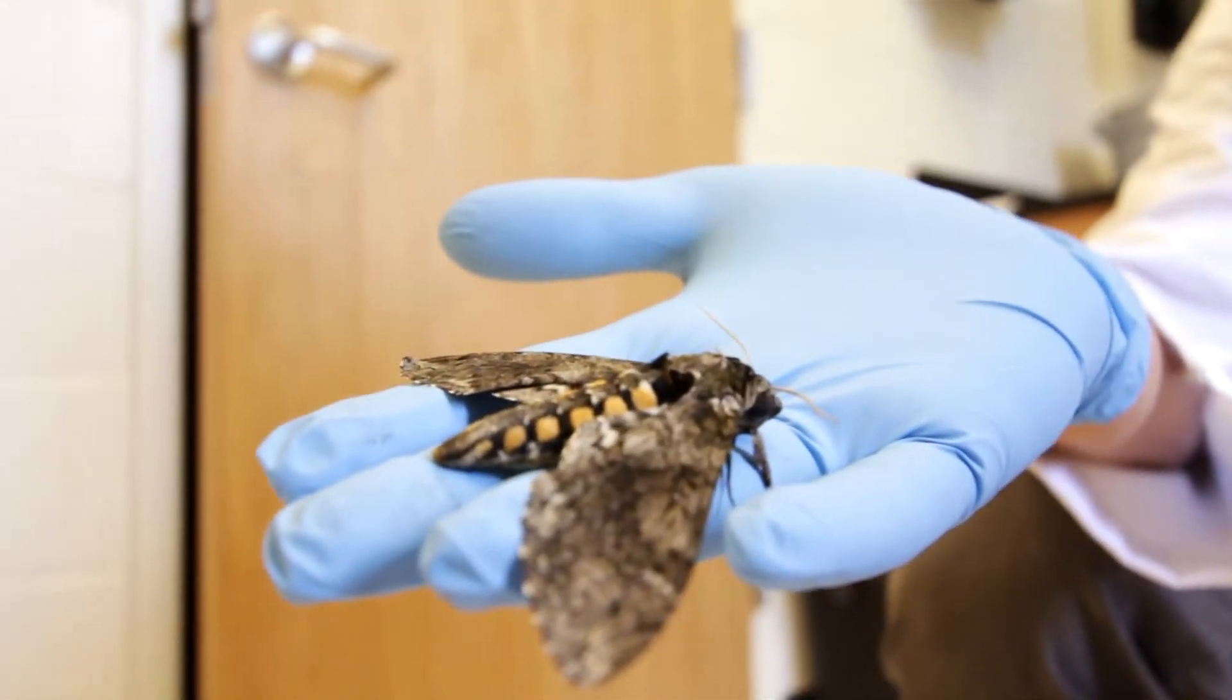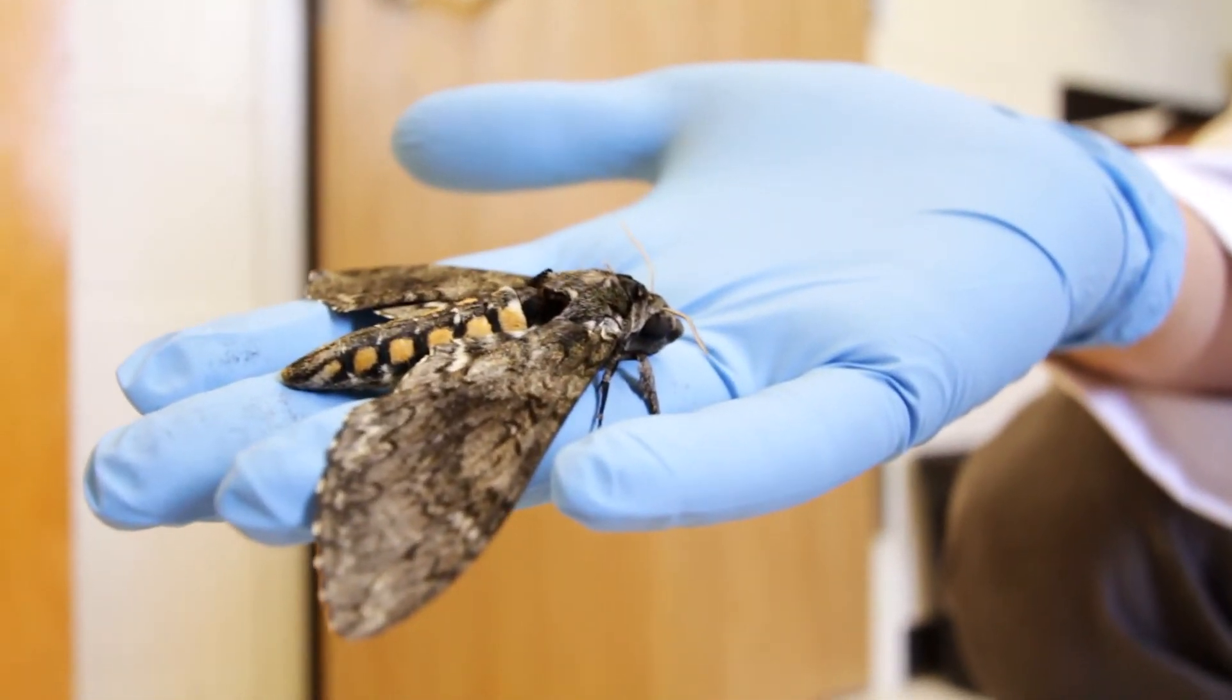Hawk moths are nocturnal or crepuscular flying moths. Crepuscular means that they fly at dusk or at dawn, so in very variable light environments.